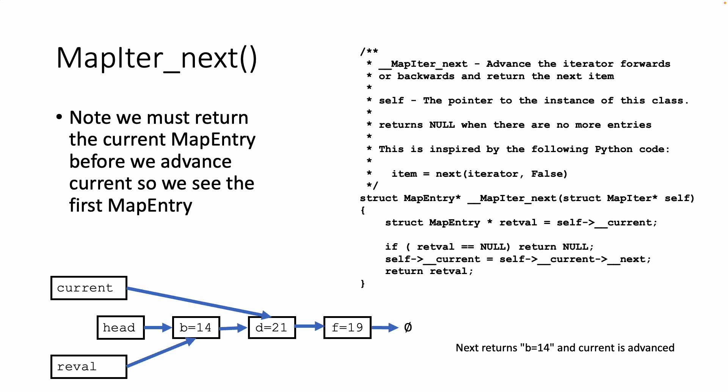So then it comes in, and retval grabs 21, and that's what we return, and then we advance to 19, and you can kind of see retval and current chase each other down this linked list. So we return f equals 19, and then current points to null, and then we notice that current is null, and then we return null to tell our calling code that we are finished.